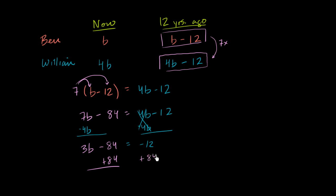So let's add eighty-four to both sides. On the left hand side, I'm just left with 3b. And on the right hand side, I have negative twelve plus eighty-four, or eighty-four minus twelve, which is seventy-two.